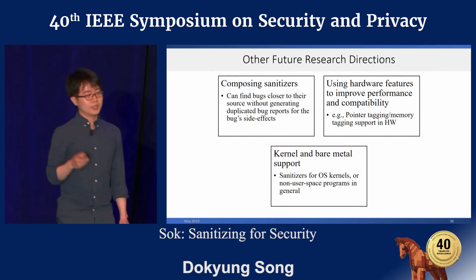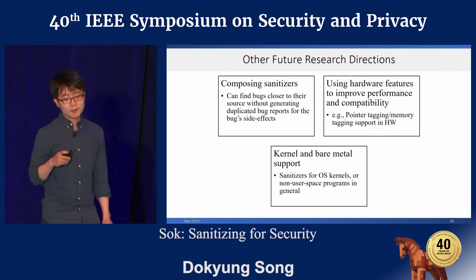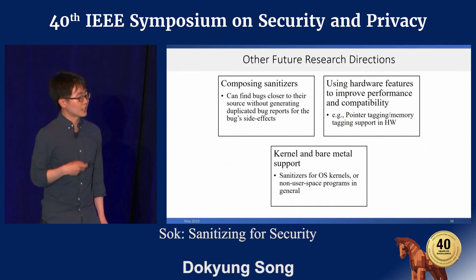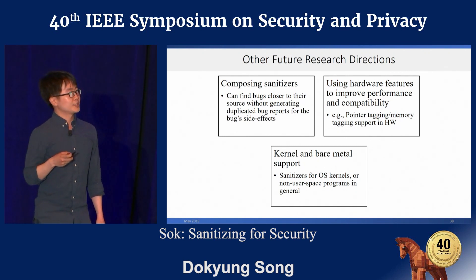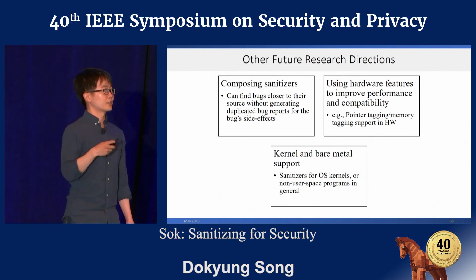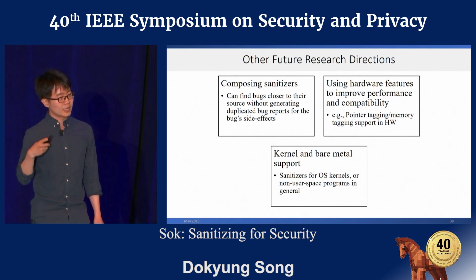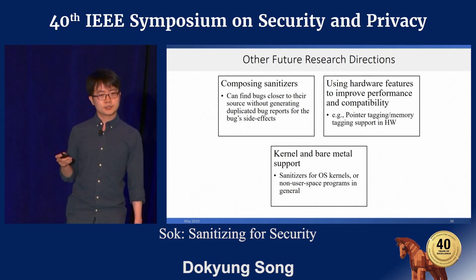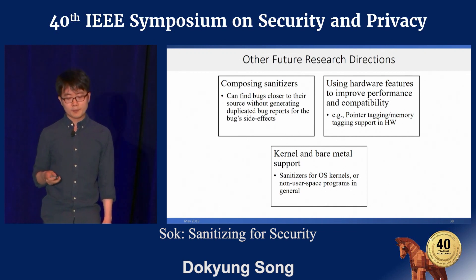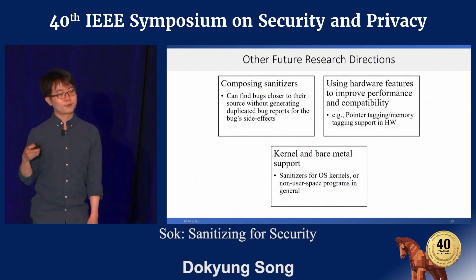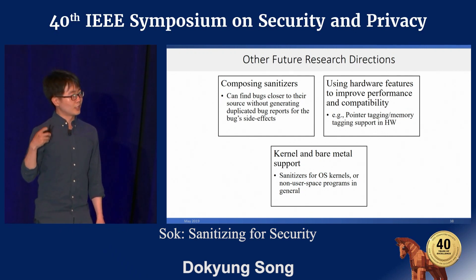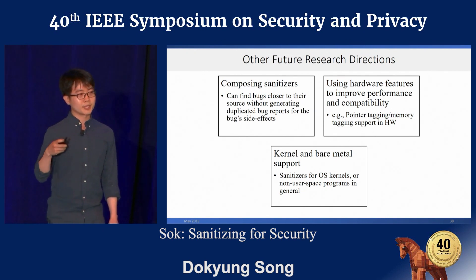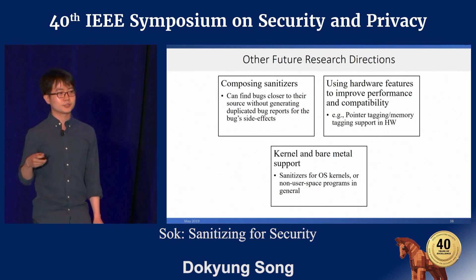Besides addressing challenges related to bug detection precision, there are several areas for future research that we find promising. Composing sanitizers would help users find bugs closer to their source and use resources more efficiently. Perhaps more importantly, with newly available hardware features such as address tagging and memory tagging in ARM, we may want to revisit some of the precision and performance challenges that software-based tools had to face. It would also be interesting to see whether research in user-space sanitizers extends to non-user-space programs such as OS kernels.